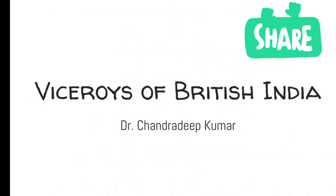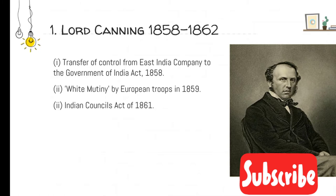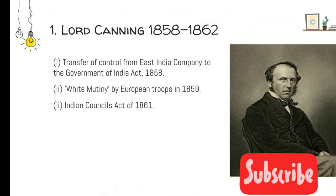We are starting with the Viceroys of British India. After what happened after 1857, the power of the East India Company was transferred to the British Crown. The Queen of England was now the head of the settlements in India. First in that row was Lord Canning, in whose time the revolution of 1857 had happened, so he became the first Viceroy of India.